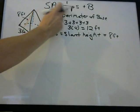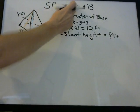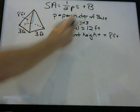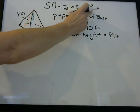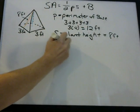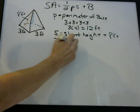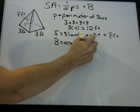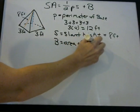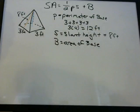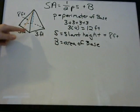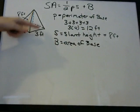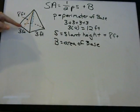So we have P as the perimeter, S as the slant height. B means area of the base. Here you need to know how to find the area of this square — area of a square or rectangle is length times width.